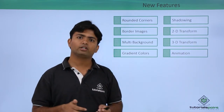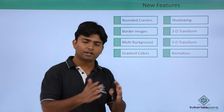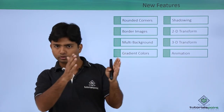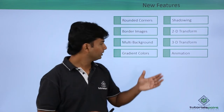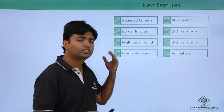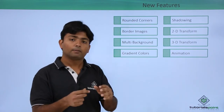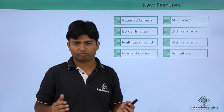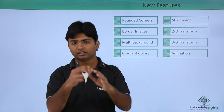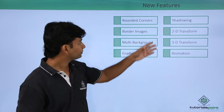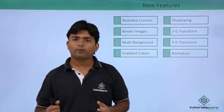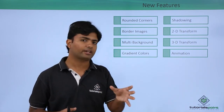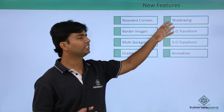Gradient colors is a very new form of making color where you can use multiple colors in a shaded format — like starting with violet, then indigo, then blue, and so on. You can use different colors in a shaded manner, either as a linear gradient or a radial gradient when working with something circular in shape.